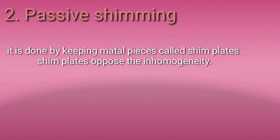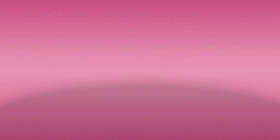In passive shimming, metal plates are placed near the magnetic field. These are called shim plates, which oppose the inhomogeneity. This is how passive shimming works, and through this, magnetic field homogeneity is maintained.